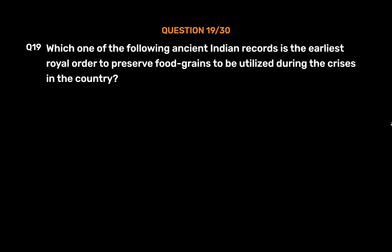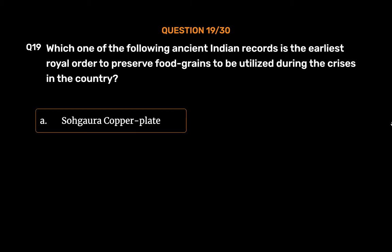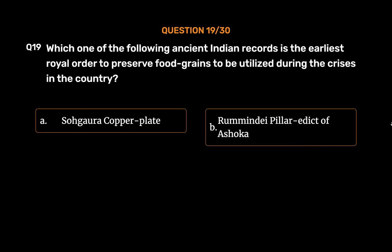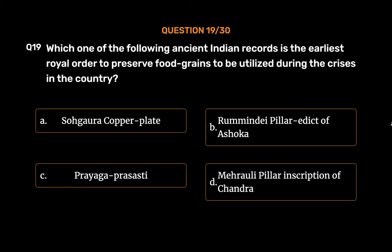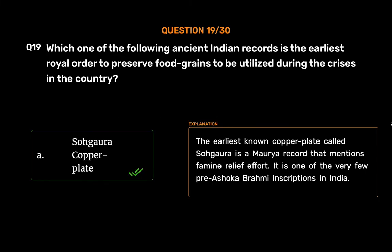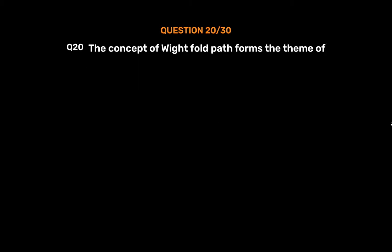Question number nineteen: Which one of the following ancient Indian records is the earliest royal order to preserve food grains to be utilized during crises? Option A: Sohagaura Copper Plate, Option B: Rummindei Pillar Edict of Ashoka, Option C: Prayaga Prashasti, Option D: Mehrauli Pillar inscription of Chandra. The correct answer is Option A, Sohagaura Copper Plate. The Sohagaura Copper Plate is a Maurya record that mentions famine relief efforts and is one of the very few pre-Ashoka Brahmi inscriptions in India.